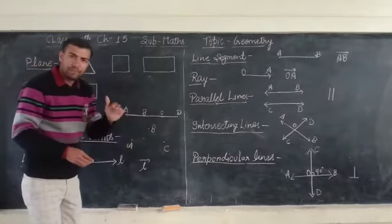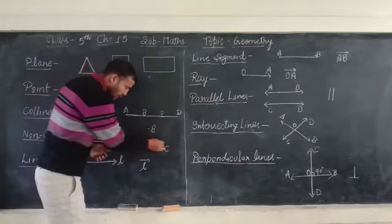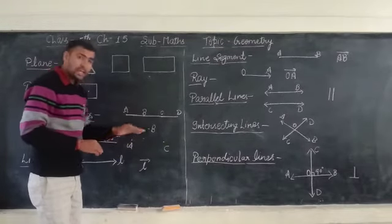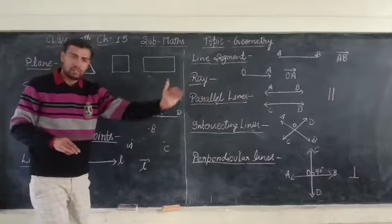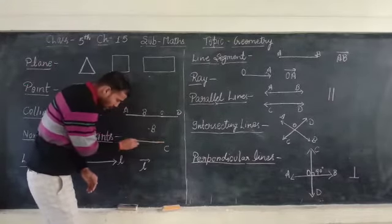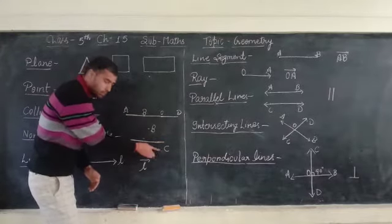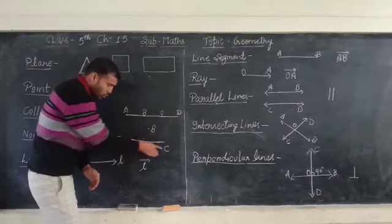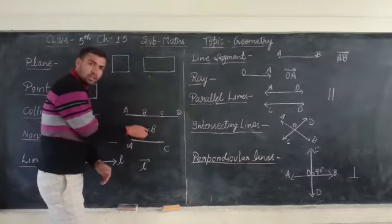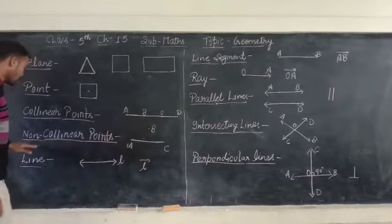Because if we take three points A, B, and C, but they do not lie on the same line — A, B, and C are not all on one single line — then those are non-collinear points. Like a line, they do not lie on the same line, so this is called non-collinear.